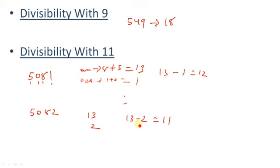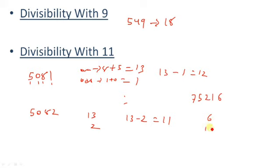Take one more example: 75216. Sum of even place digits: 1 + 5 = 6. Sum of odd place digits: 6 + 2 + 7 = 15. Subtracting: 15 − 6 = 9. Since 9 is not divisible by 11, so 75216 is not divisible by 11. To summarize: find the sum of even place digits (2nd, 4th, 6th), find the sum of odd place digits, subtract; if the result is 0 or divisible by 11, the number is divisible by 11.